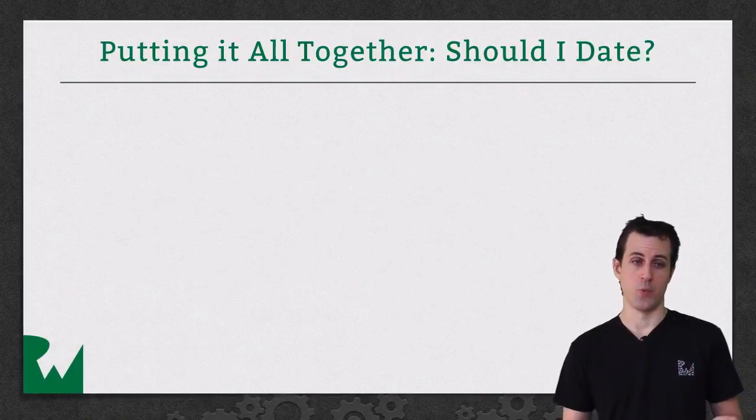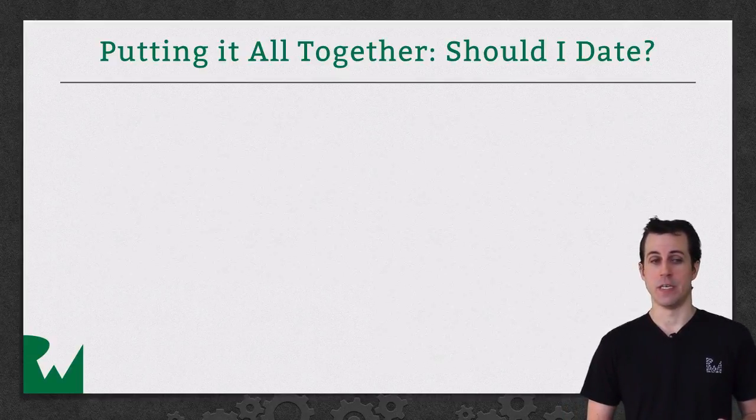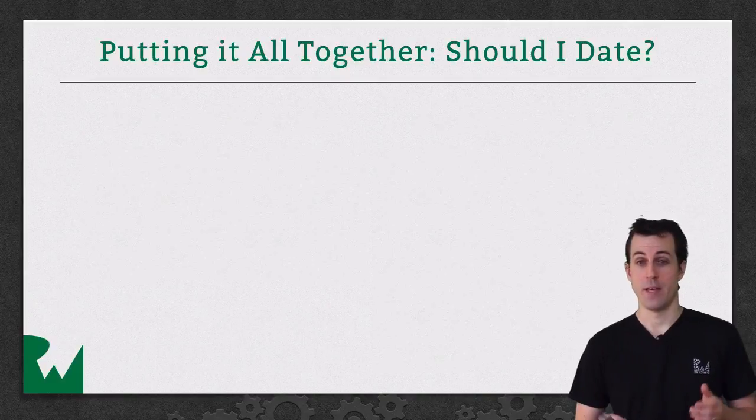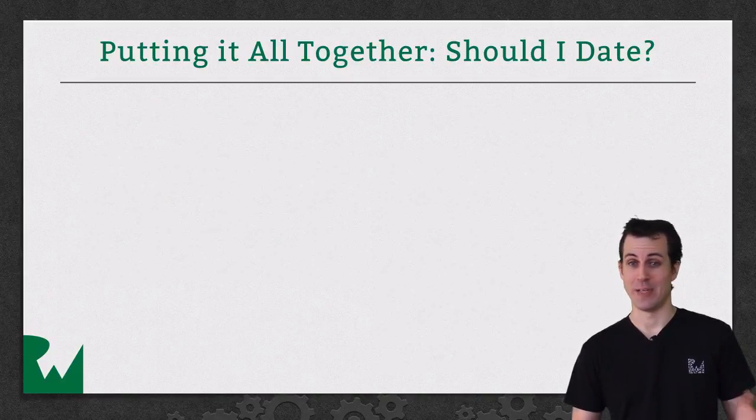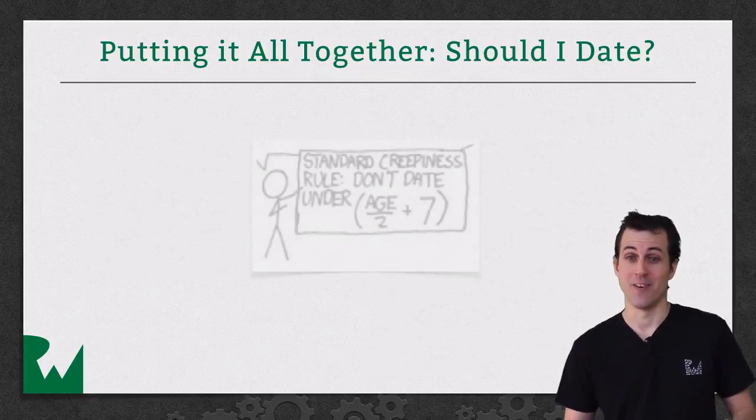I bet you're dying for an example at this point, so what example should we use? We're going to make a date calculator. The reason for this is when I first met my wife, she was a freshman in college, and I had graduated from college. So she was only 18, and I think I was like 22 or 23. And I was worried if there was too much of an age gap between us and if it was too creepy for me to date her.